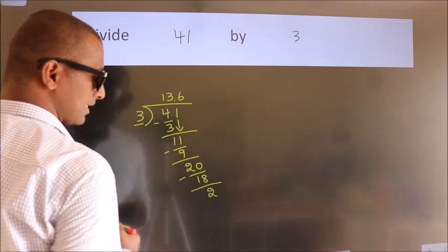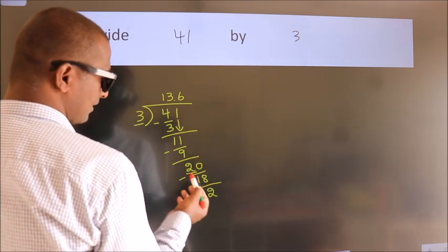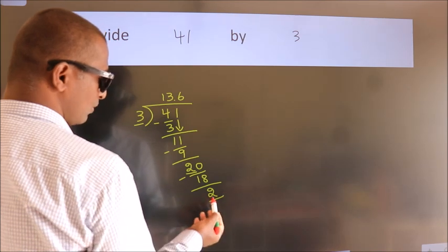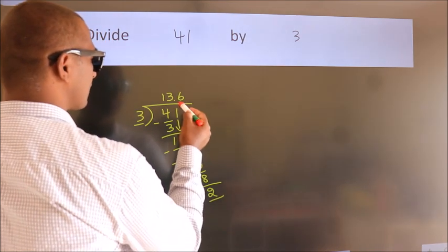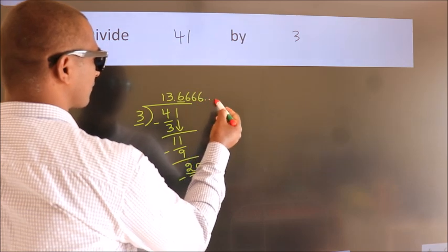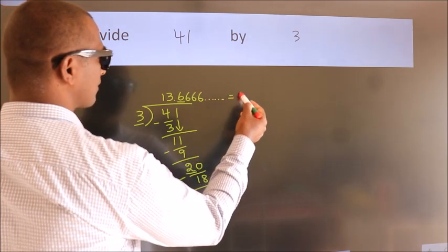Now you observe, we had 2 here and we got 2 again. That means this number keeps on repeating. So this is our quotient.